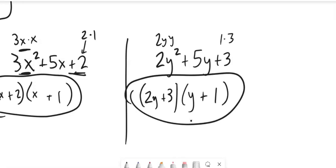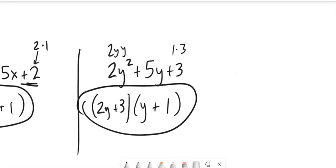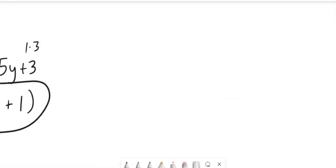So that guess and check, that trial and error method, it works, and sometimes it's a real efficient way to do it. There's another method that we can use that's called the AC method. And it comes from this. The general way to write these are ax squared plus bx plus c. You might remember that from an algebra class that you've taken before, where a is the term that goes with x squared, c is the 1's term, and b is the number that goes with just x.